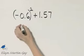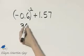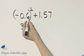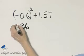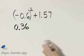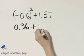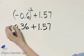We know 6 times 6 is 36 and each one of these factors has one decimal place. 1 plus 1 is 2 so there is our product 36 hundredths plus 1 and 57 hundredths.